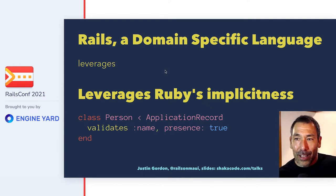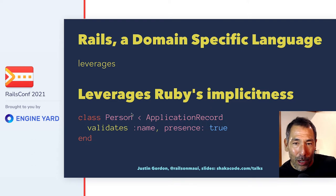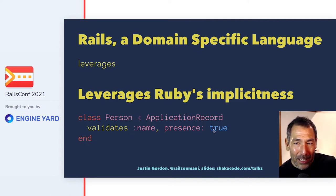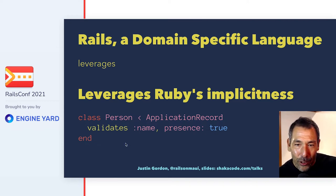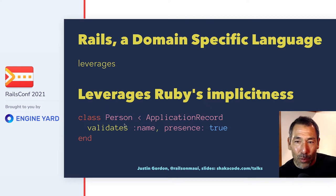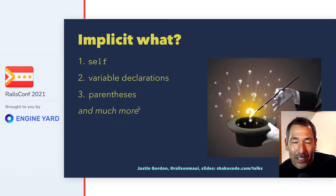With Rails we got a domain specific language, and what that means is that when we write some Ruby code it is speaking directly to the problem we're trying to solve — a web application. If you look at this: `class Person extends ApplicationRecord; validates :name, presence: true` — there's hardly a single extra character. This code says exactly what it is: you want to define this Person class and it's going to have validation on the name. That's what we mean by a DSL.